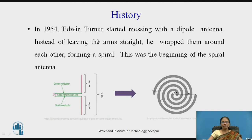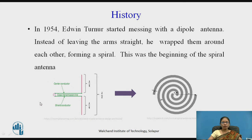So how did the spiral antenna come into picture? In 1954, Edwin Turner started experimenting with the dipole antenna. Instead of leaving the arms as straight open arms, he wrapped them around each other, forming a spiral. Here you can see this is a lambda by 2 dipole antenna whose arms are straight, but here each arm is rotated, forming a spiral antenna structure.